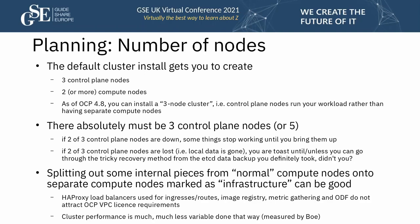Regarding the number of nodes: the default cluster install gives you three control plane nodes and two or more compute nodes. As of 4.8, you now have the choice of a three-node cluster — just three virtual machines where the control plane nodes also run your workloads — rather than separating workloads onto separate nodes. That's not normally what you'd do for production use, but might be worth considering for sandpits and play pens.